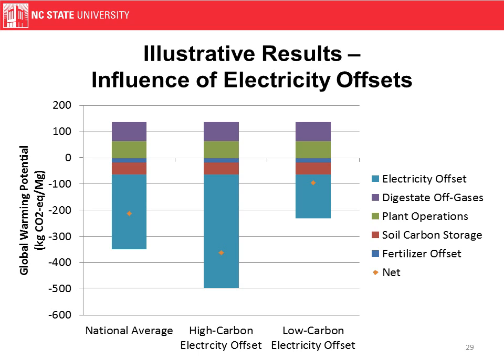We saw in the previous figure that the electricity offset was the largest component. Here we're looking at different electricity offset options and the impact on the overall system. On the left we have a national average grid being offset; in the middle, a high-carbon, coal-dominated electricity grid; and on the right, a low-carbon grid that's more nuclear or hydro. This has a pretty big effect on the net global warming potential with the same system configuration.